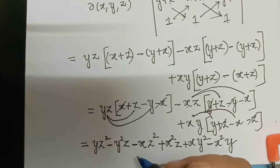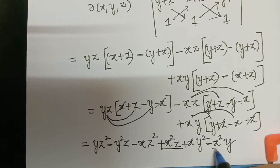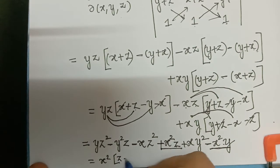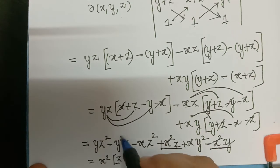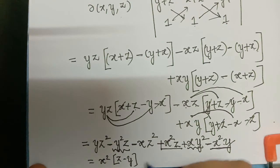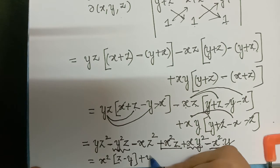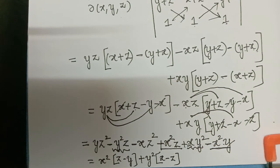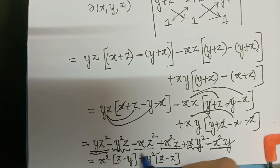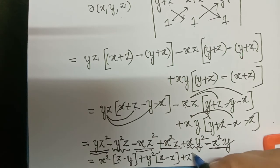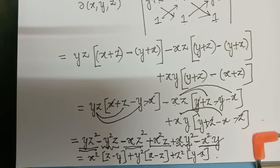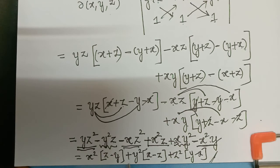Now simplifying by grouping: x² is common in x²z and minus x²y, giving x²(z minus y). Then y² is common in xy² and minus y²z, giving plus y²(x minus z). And z² is common in yz² and minus xz², giving plus z²(y minus x). So the final answer is x²(z−y) + y²(x−z) + z²(y−x). This is the Jacobian of u, v, w with respect to x, y, z. Thank you.